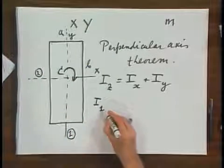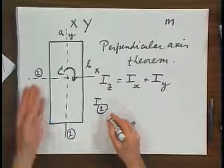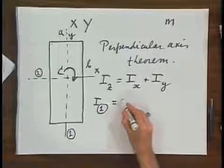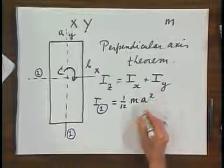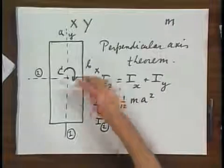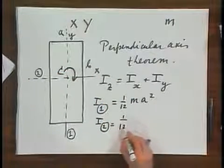I of 1, you either look up in a table or you derive it as we did in a different segment. I of 1 equals 1 twelfth times ma squared. I of 2, about this rotation axis, equals 1 twelfths mb squared.